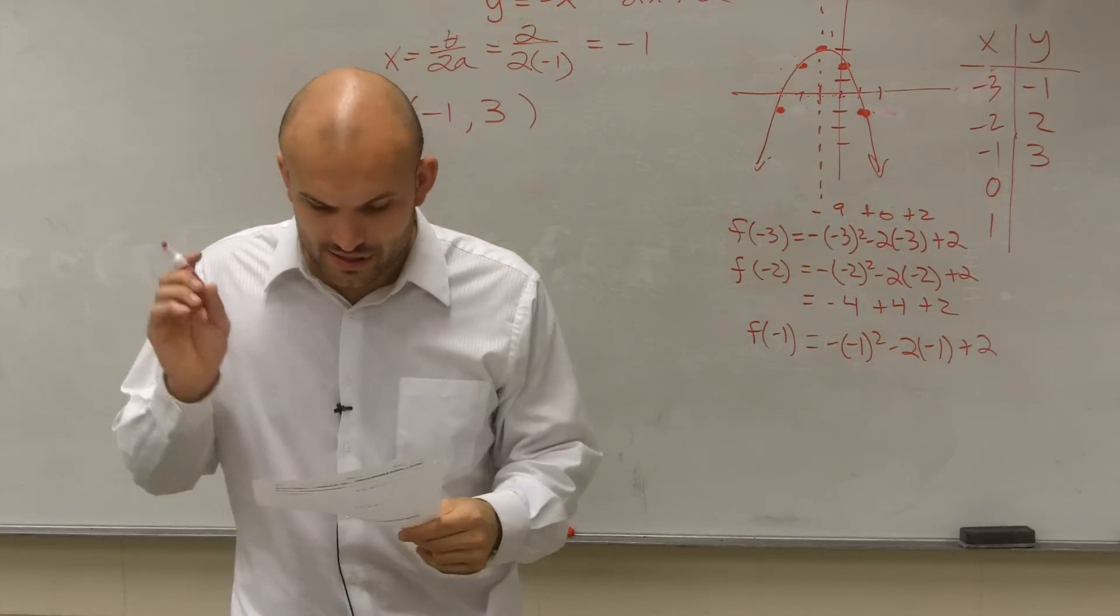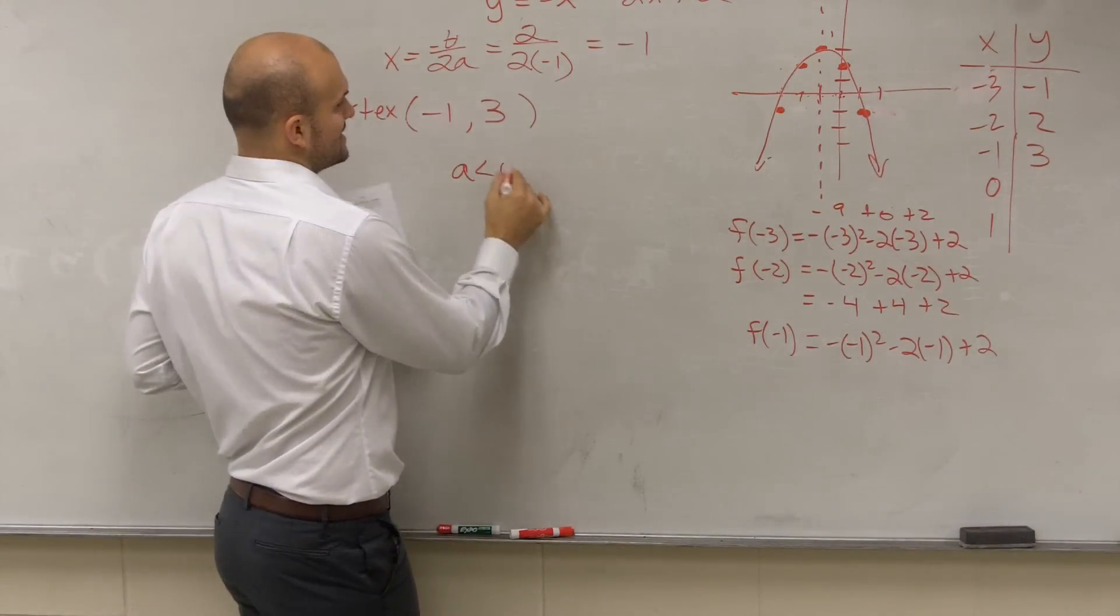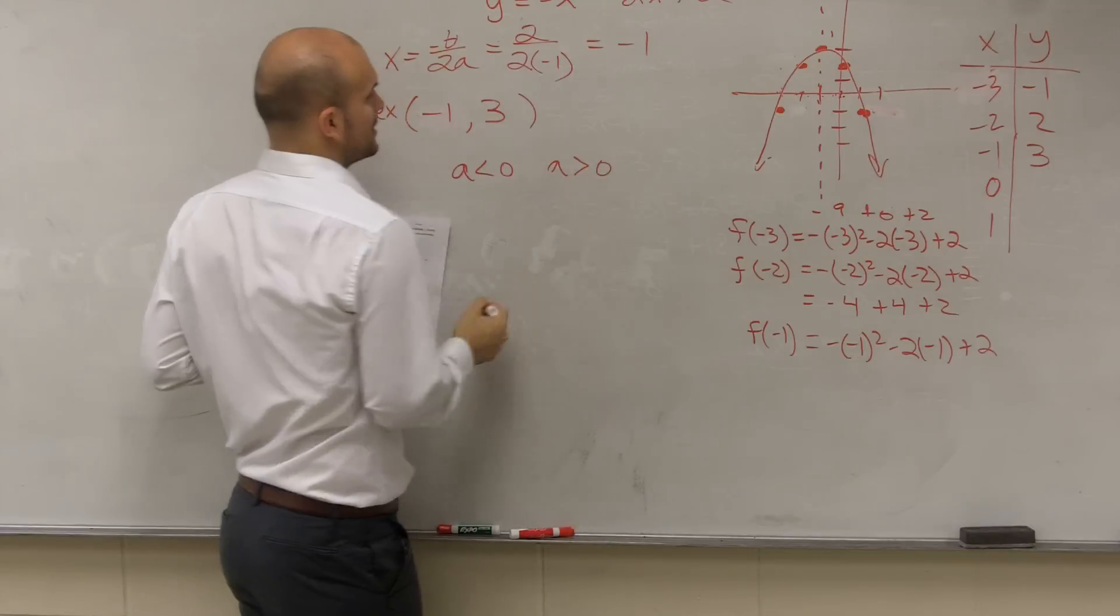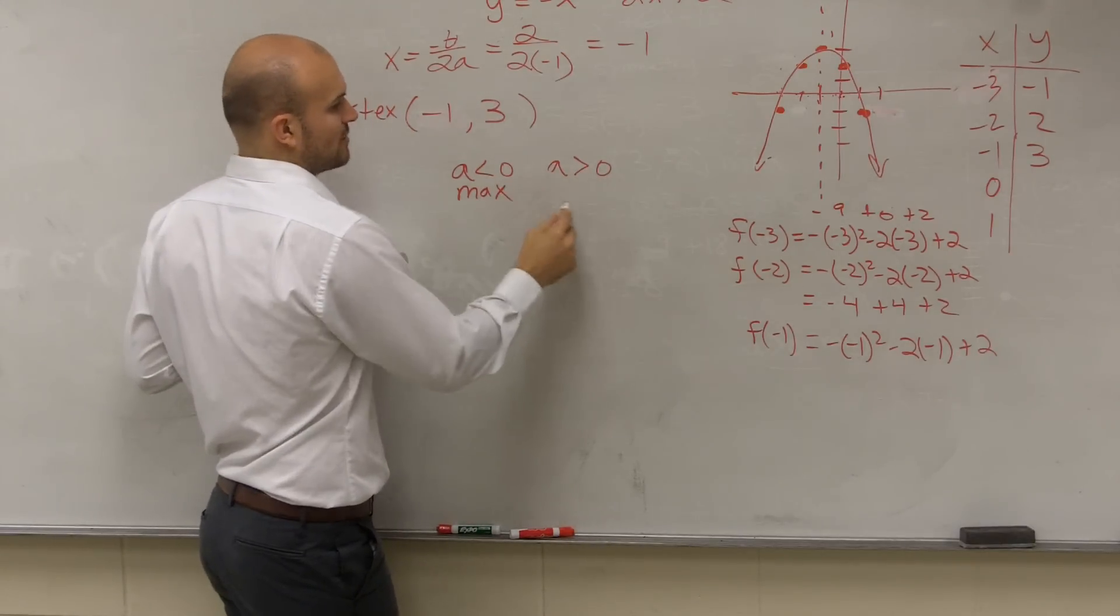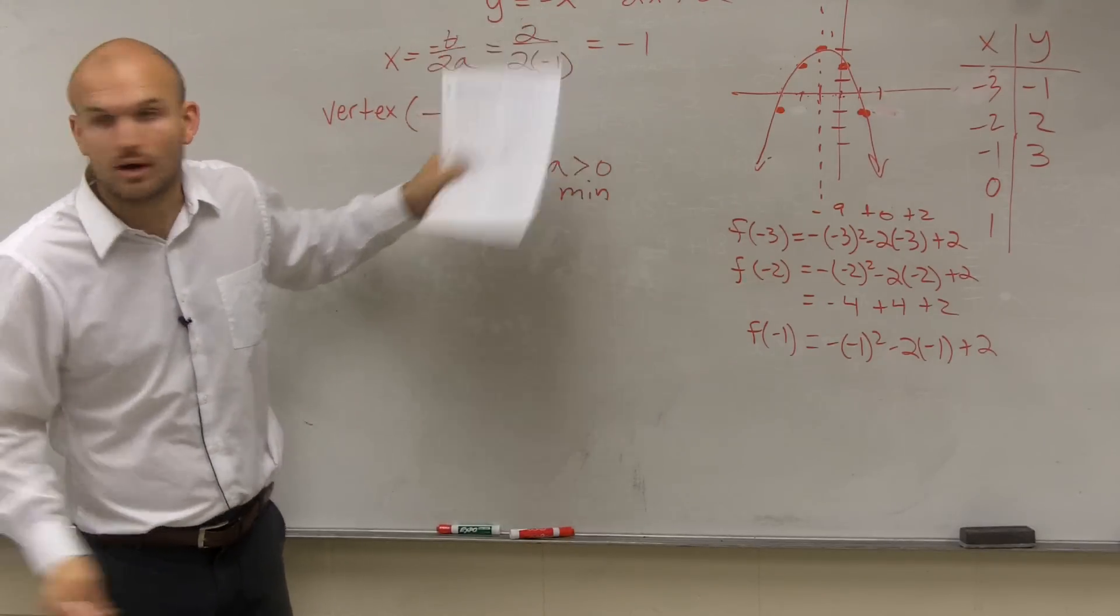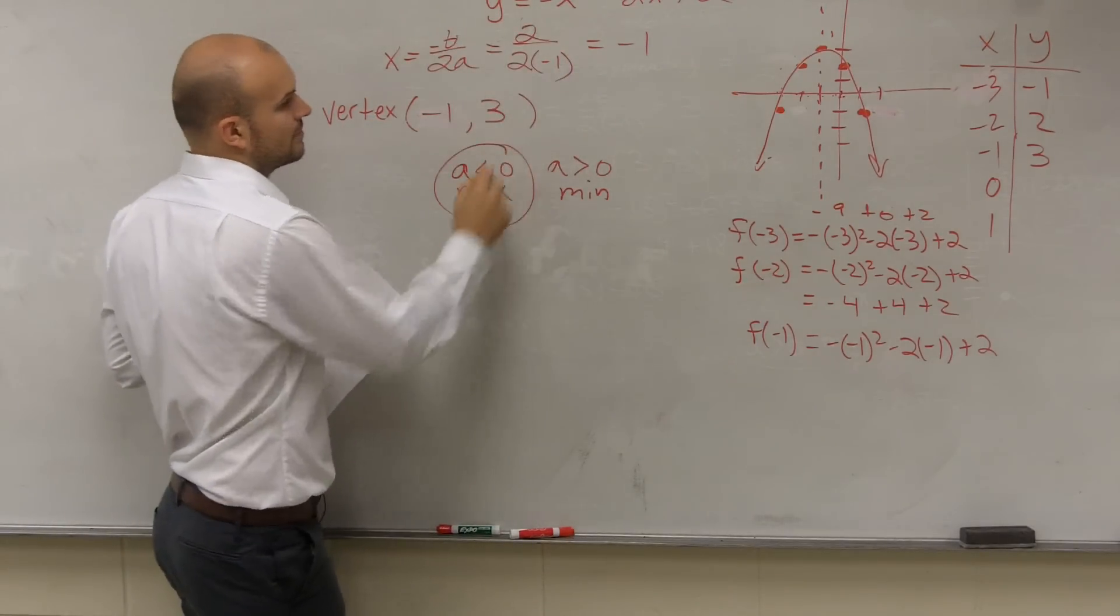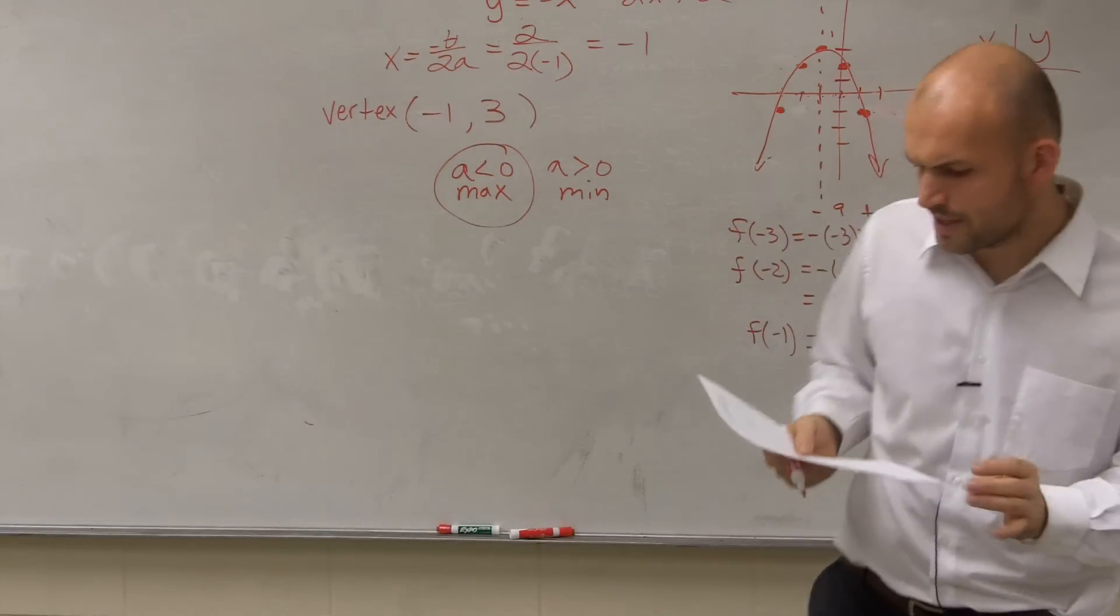So then we need to determine the maximum or minimum. So we need to look at when a is less than 0 or a is greater than 0. When a is less than 0, we have a max. And when a is greater than 0, we have a minimum. So in this point, we look at our a and our a is negative 1. So therefore, we have a maximum value. Make sense?